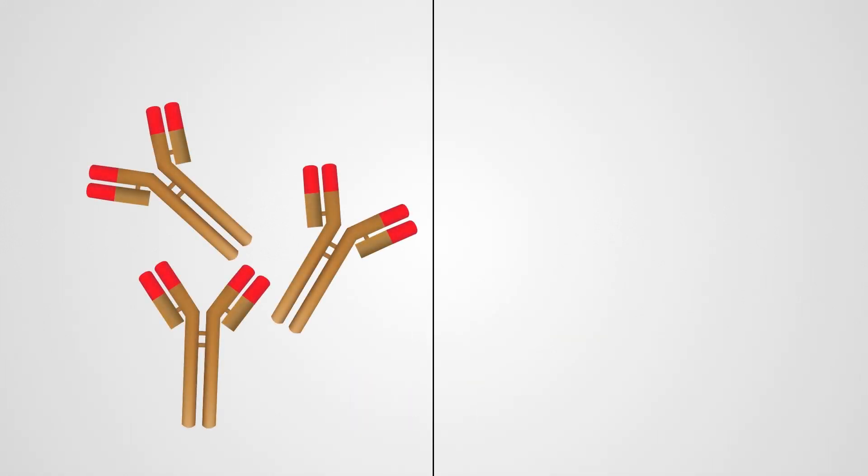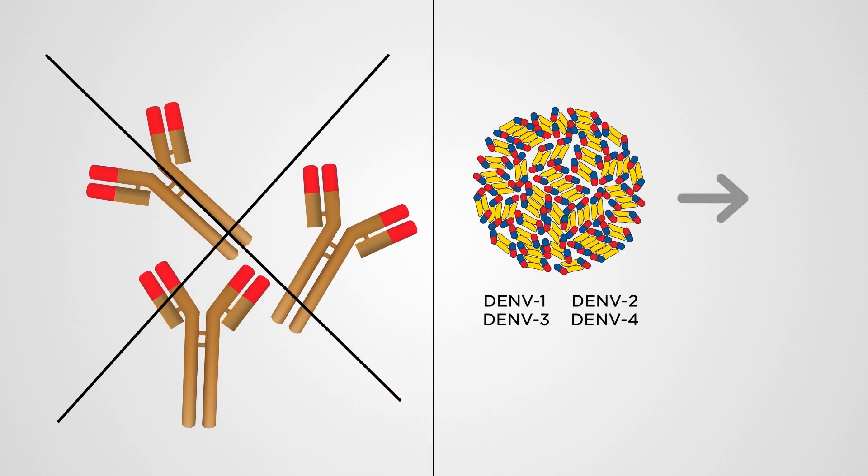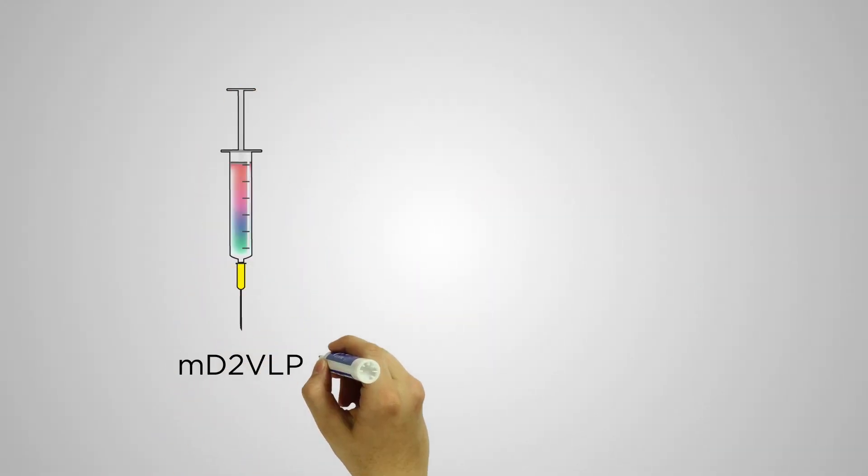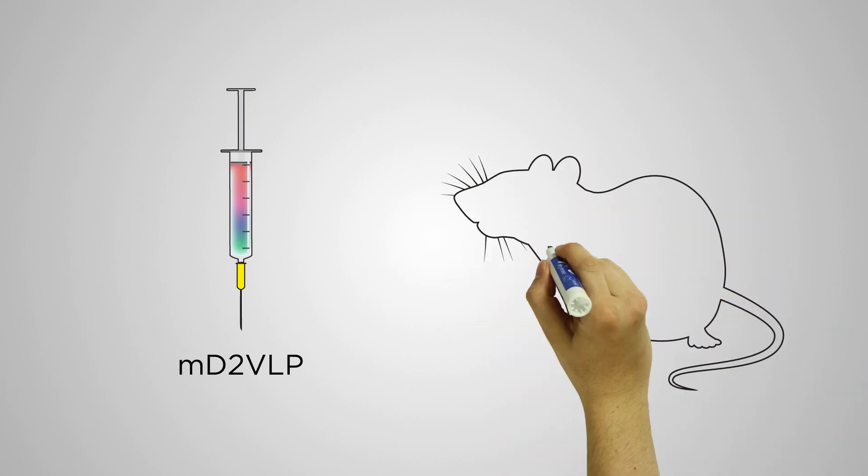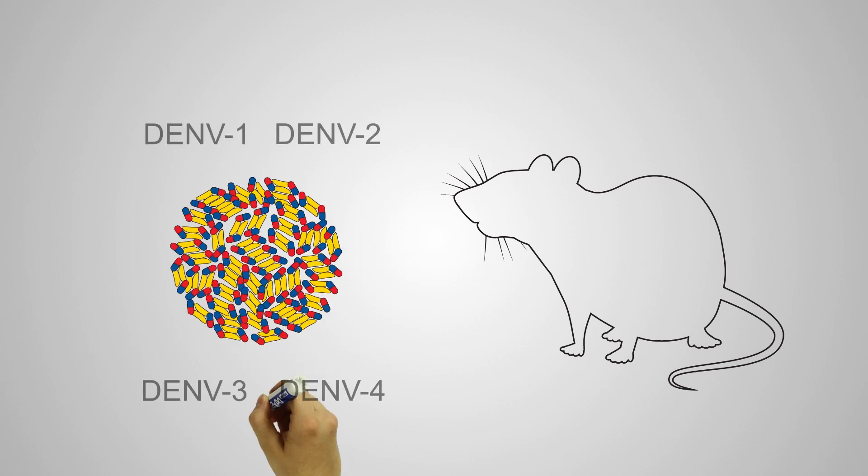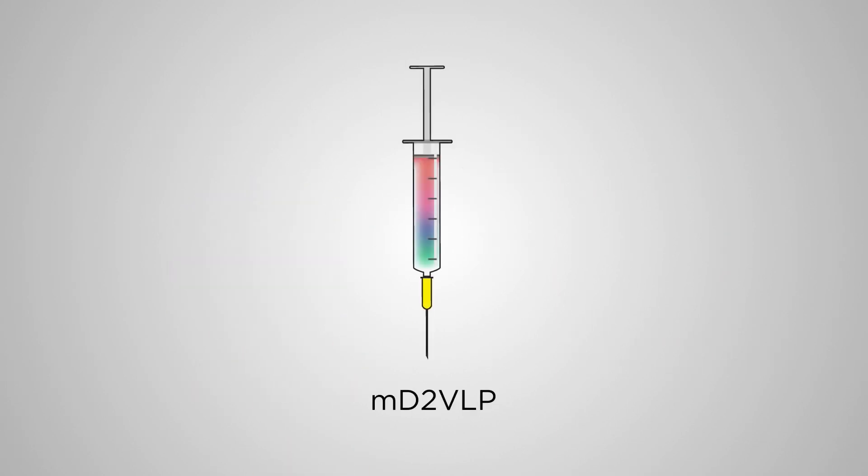MD2VLP does not induce anti-PRM antibodies and requires just one serotype formula, avoiding the need to adjust doses for four serotypes. Mice vaccinated with MD2VLP particles generated higher cross-reactive neutralisation antibodies. They were protected against all four dengue serotypes. MD2VLP is a strong vaccine candidate.